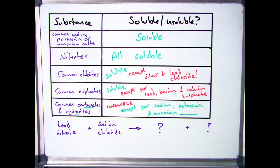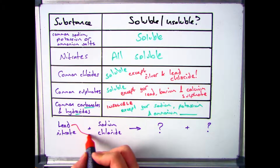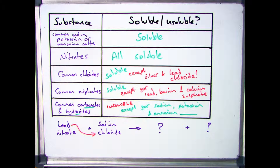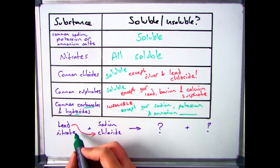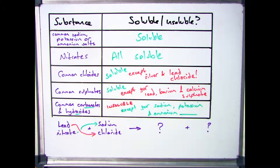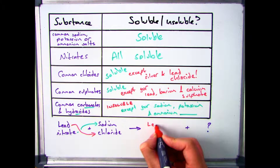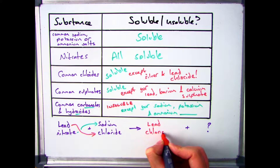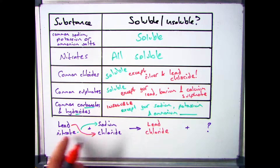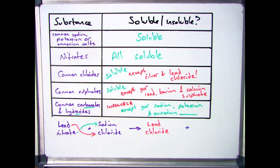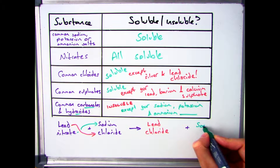So if you're given a word equation, for example lead nitrate and sodium chloride, and asked to complete it, the first thing you need to do is figure out the products. It's nice and simple - all you have to do is take the first part of the name and the last part of the name and swap them around. So you take the lead from lead nitrate and the chloride from sodium chloride to give you lead chloride, and then sodium from sodium chloride and the nitrate from lead nitrate, which gives you sodium nitrate.